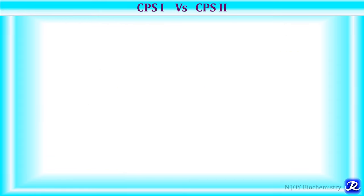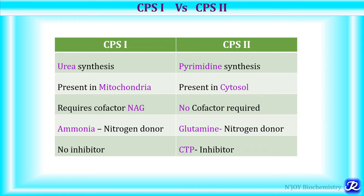There are two carbamoyl phosphate synthetase enzymes: CPS1 and CPS2. CPS1 is involved in urea synthesis, is located in the mitochondria, requires N-acetylglutamate as a cofactor, uses ammonia as its nitrogen donor, and has no inhibitor. CPS2 is involved in pyrimidine synthesis, is located in the cytosol, requires no such cofactor, uses glutamine as its nitrogen donor, and is inhibited by cytidine triphosphate (CTP).